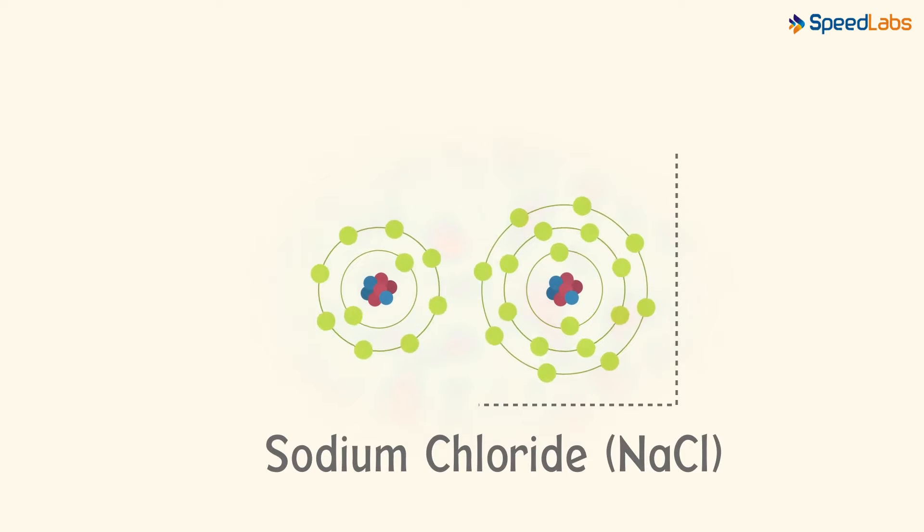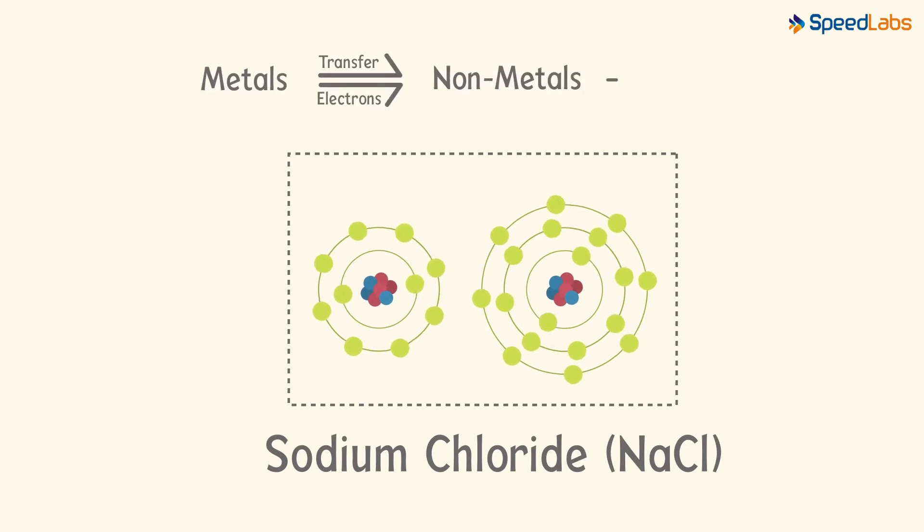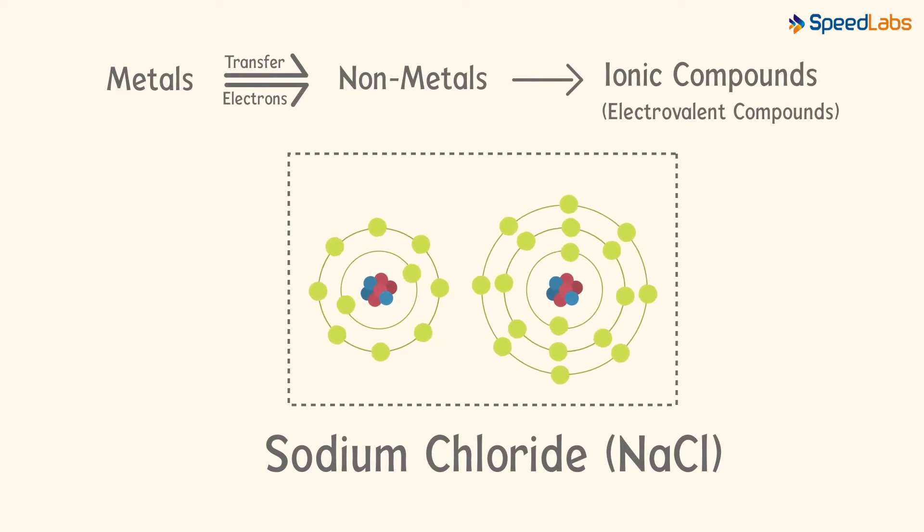The compounds formed by the transfer of electrons from a metal to a non-metal are known as ionic compounds or electrovalent compounds.